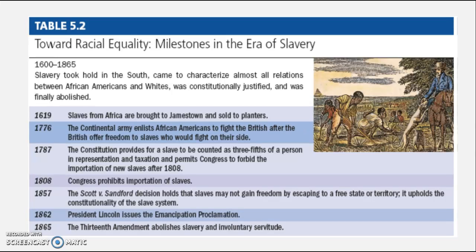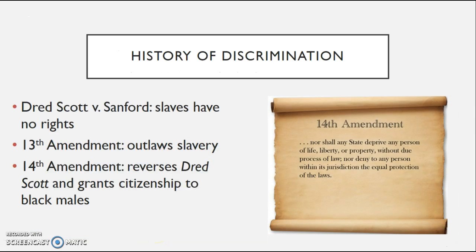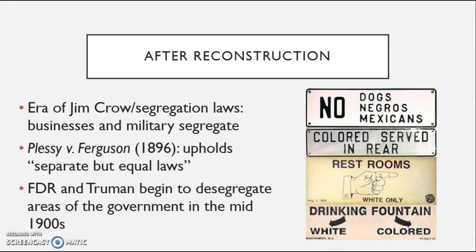The journey toward racial equality in the Civil Rights Movement has come a long way since slaves first arrived in North America in 1619, all the way to the passage of the 13th Amendment abolishing slavery in 1865. But of course discrimination does not just end there. Even before the Civil War, you had the Dred Scott decision, which basically said slaves have no rights. After the Civil War, the 13th, 14th, and 15th Amendments were passed — humongous amendments to help former slaves. However, after Reconstruction, whites in the South were very clever about passing racist Jim Crow or segregation laws, allowing businesses and the military to legally segregate.